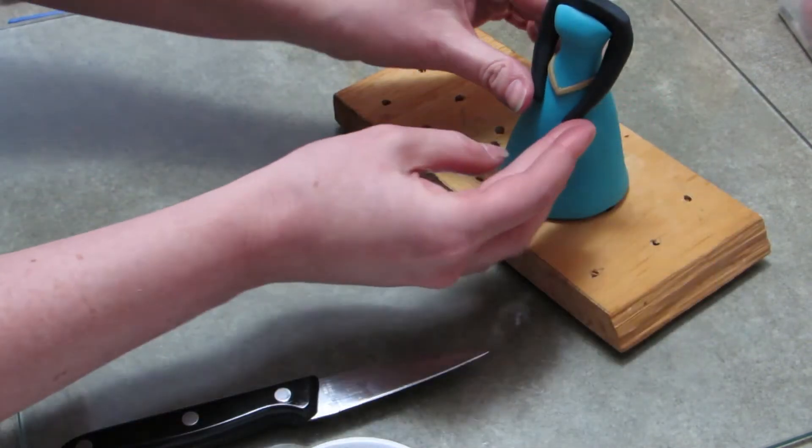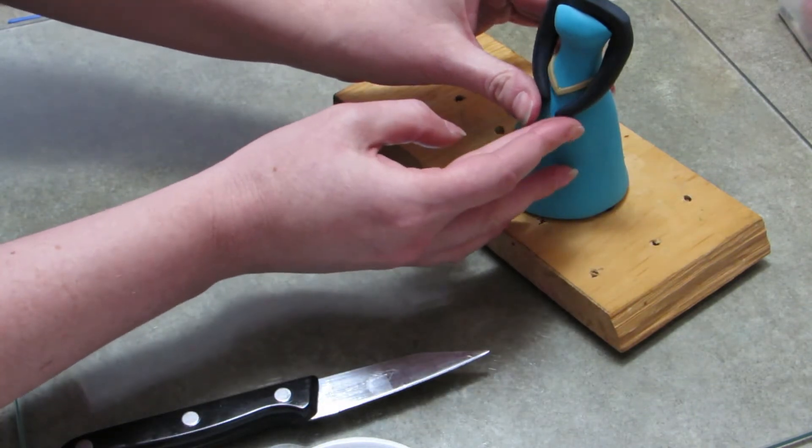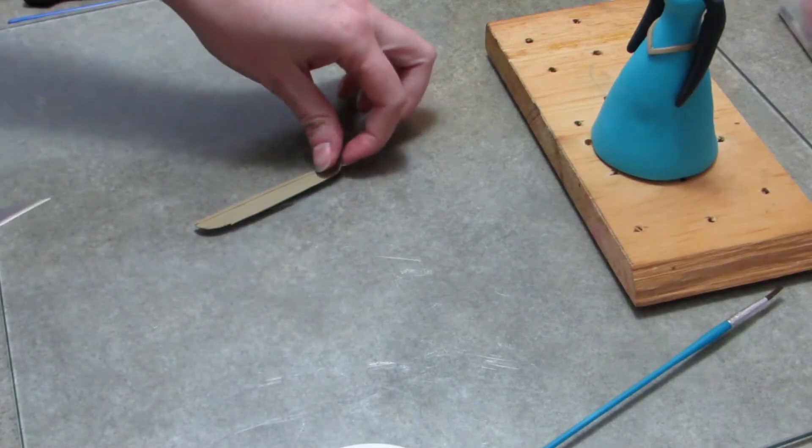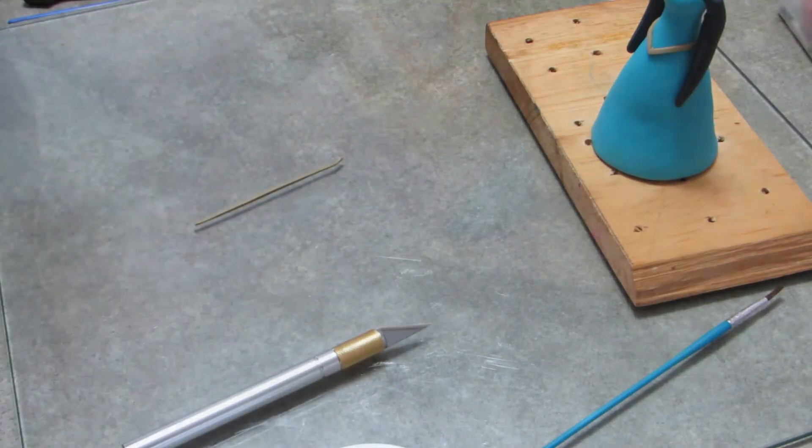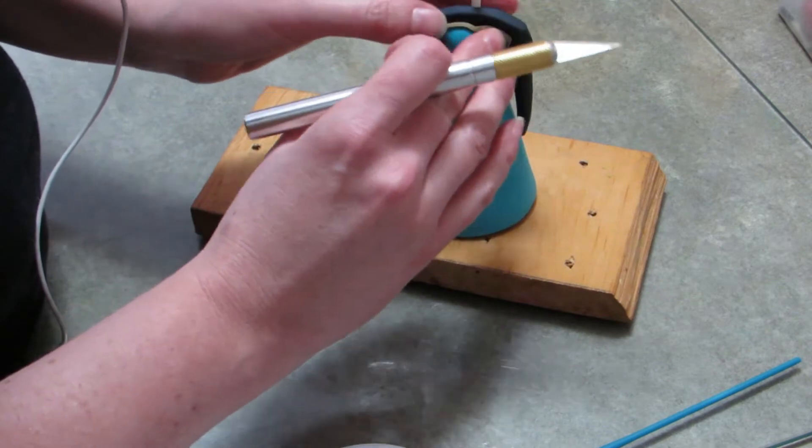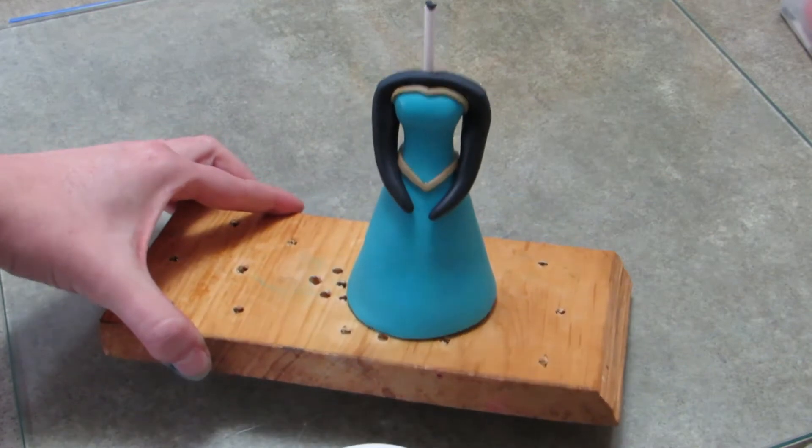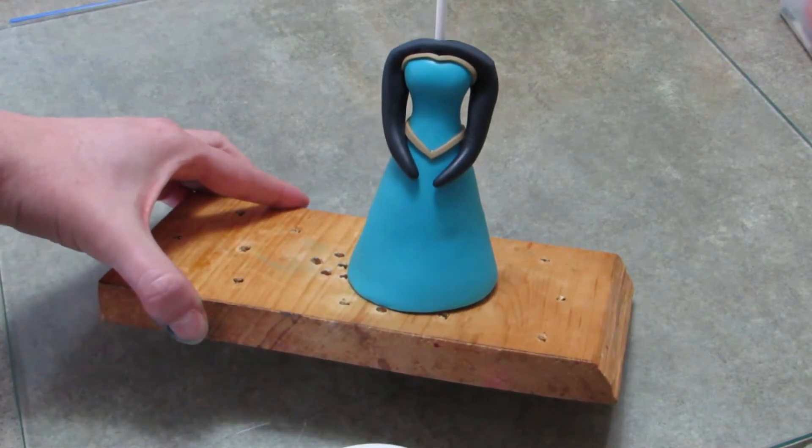As you can see here, it's already looking fabulous, coming together very nicely. Once I got that piece in place, I'm going to take another piece of that brown and go over the top of the blue bodice and make a little indent in the center because her dress actually has like a cleavage imprint kind of thing going. Right there looking awesome and next I'm going to make the gloves.